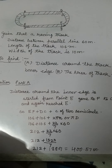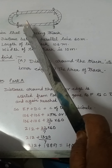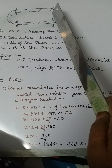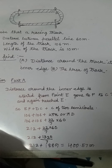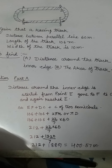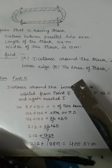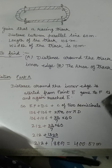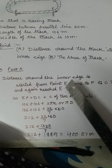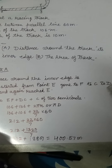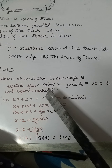To solve part 1 — distance around the inner edge — we count starting from E, go to F, then F to C, then C to D, and D back to E. Here F to C and D to E are the two semicircular ends. These two semicircular ends will together make a full circle, and to find the length of the circle we use the circumference formula.